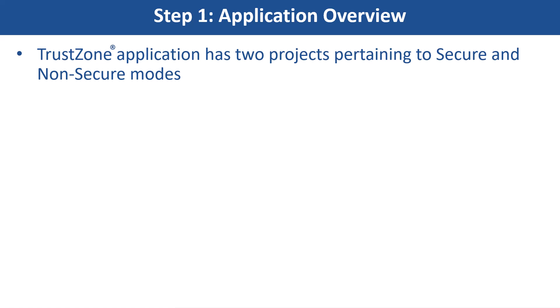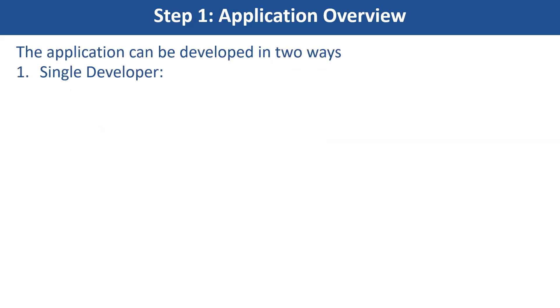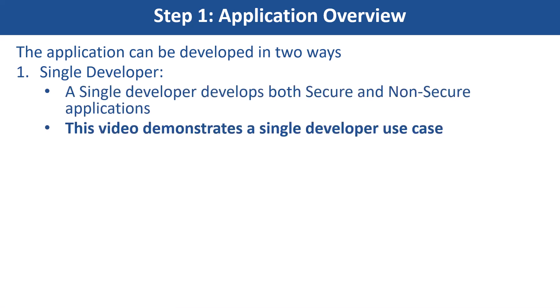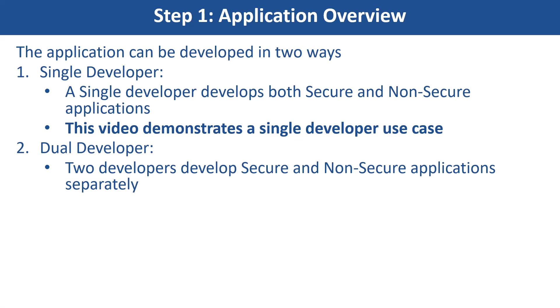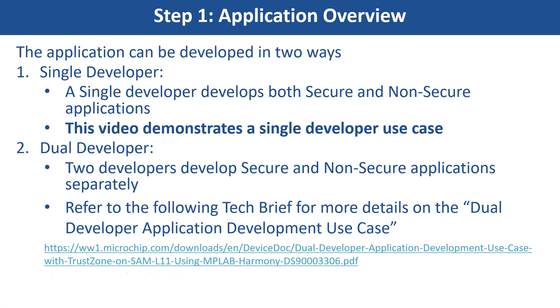A TrustZone application has two projects pertaining to secure and non-secure modes of PIC32CK-HG that work together on the same MCU and offers a security isolation between the trusted and the non-trusted resources in the device. The application can be developed in two ways. First, is the single developer — in this case, the single developer develops both secure and non-secure application. In dual developer, secure and non-secure application are developed by two developers. Refer to the following tech brief for more details on the dual developer application development use case.